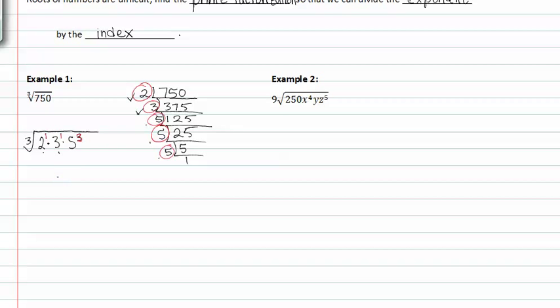3 will not go into 1 and so 2 stays in. Again, 3 will not go into 1 and so the 3 stays in. 3 will go into 3 one time and so 5 to the first power comes out. And a remainder of 5 to the 0 stays in, which is just the same as 1 so we don't even need to write it there. So my final simplification for the cubed root of 750 is 5 times the cubed root of 6 because 2 times 3 is 6.